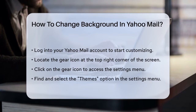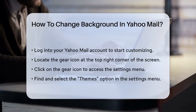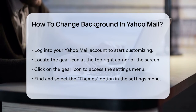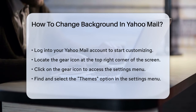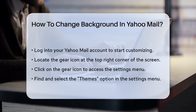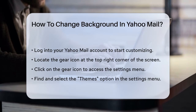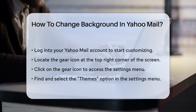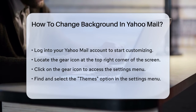First, log in to your Yahoo Mail account. Once you're in, look for the gear icon at the top right corner of the screen. Click on this icon to open the settings menu. In the settings menu, you'll see an option labeled Themes.